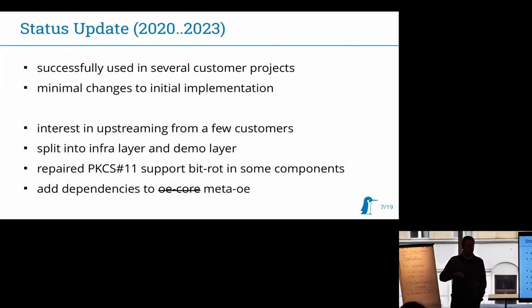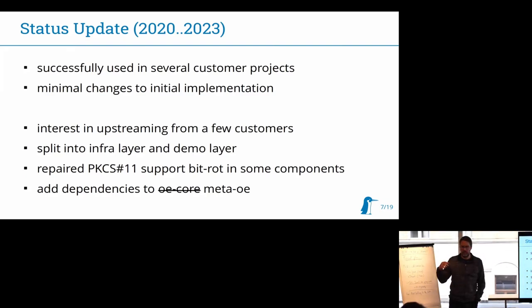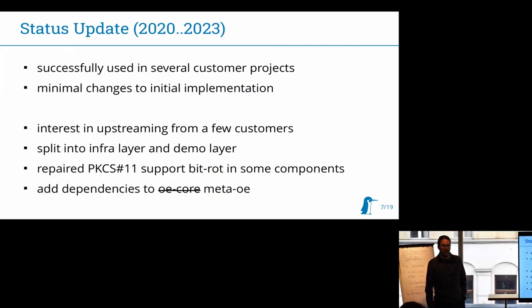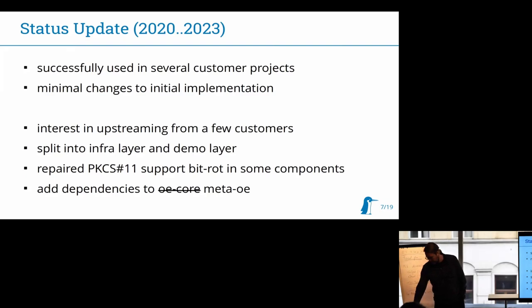I've also split up the code. There's now one layer for the infrastructure — the signing BB class — and another layer, which is much larger, for showing how this all fits together in a QEMU environment. I had to repair a few things like kernel module signing with PKCS11 URLs, because that just broke a year ago and nobody noticed. But that's repaired now and it's going to be in 6.2.